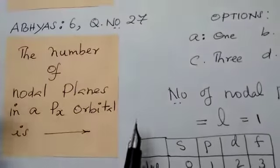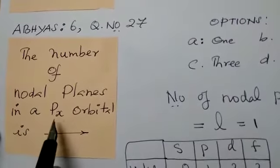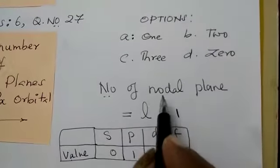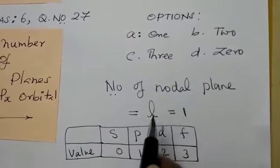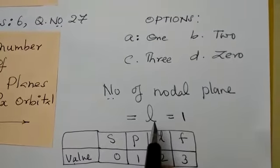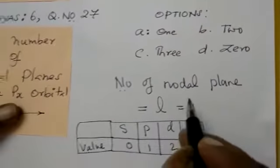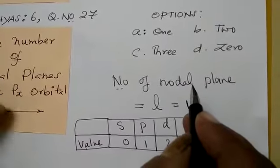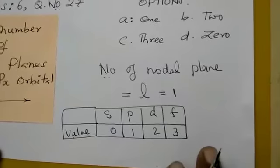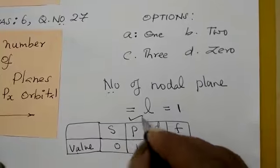Now coming here. Chapter 6, question number 27. The number of nodal planes in a Px orbital is... Here the formula is number of nodal plane is equal to simply l, the azimuthal quantum number. This is the formula for the nodal plane. Now what is the azimuthal quantum number? Here it is given as Px. The orbital is labeled as P. Now the values of azimuthal quantum number for all the orbitals are given: S, P, D, F are 0, 1, 2, 3. Our question is P.